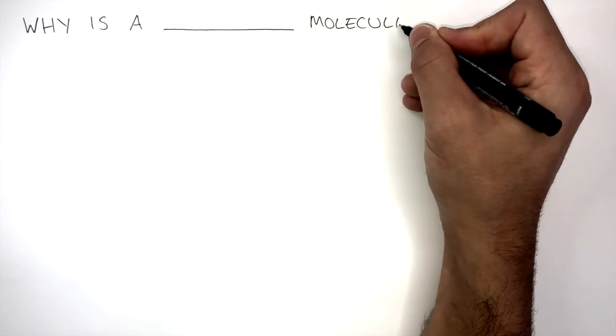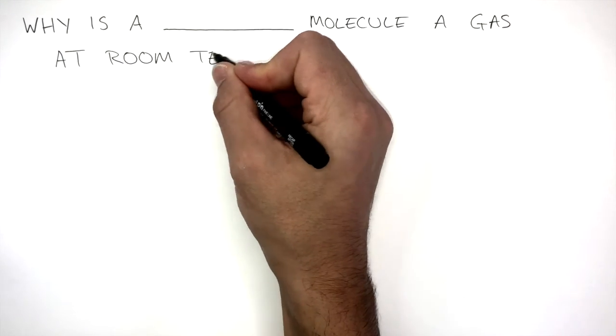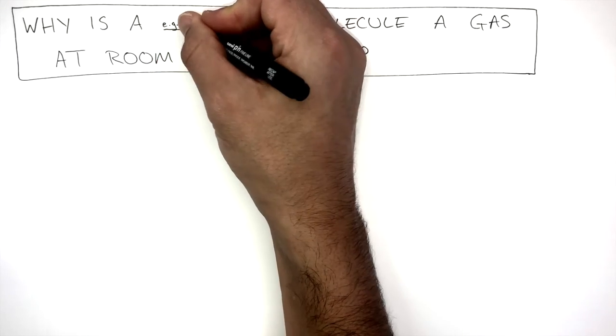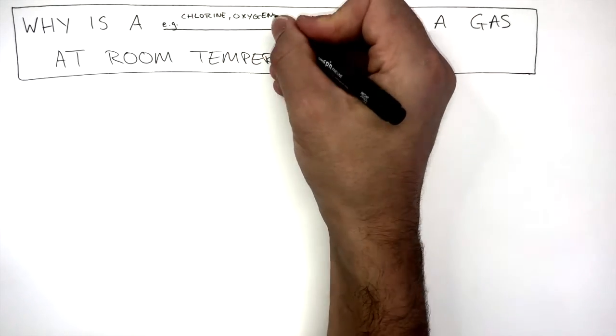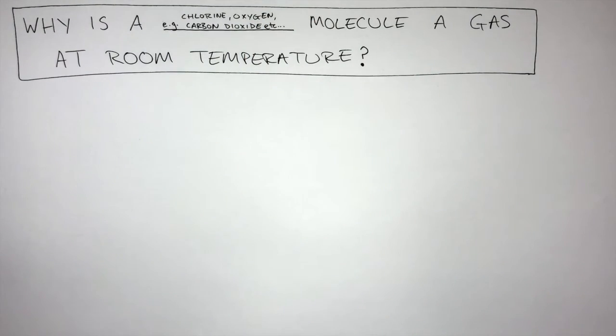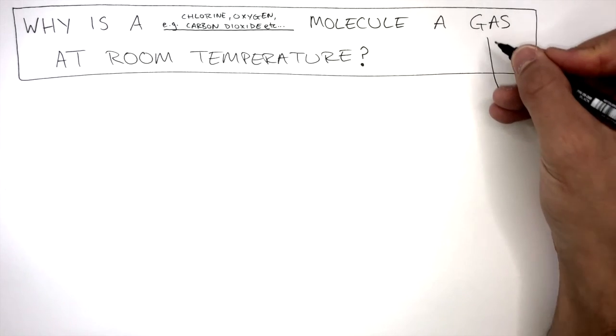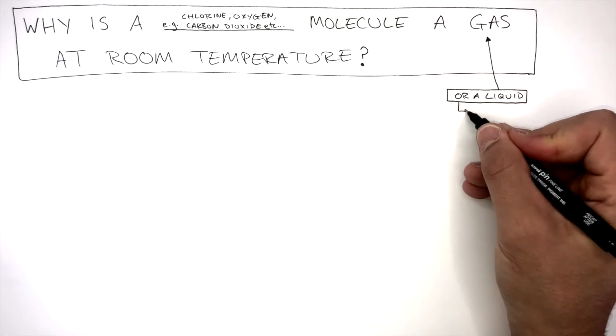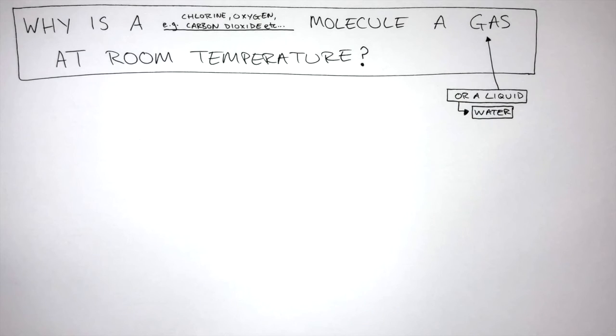This is a classic exam question which they love to ask in your exam. The question normally goes like why is a blank molecule a gas at room temperature? And they will ask you about any simple molecular substance such as chlorine, oxygen, carbon dioxide or anything else. Or they could ask you why a simple molecular substance is a liquid at room temperature. If they did that, it would probably be water. Now pause to answer this question. Why is a chlorine molecule a gas at room temperature?